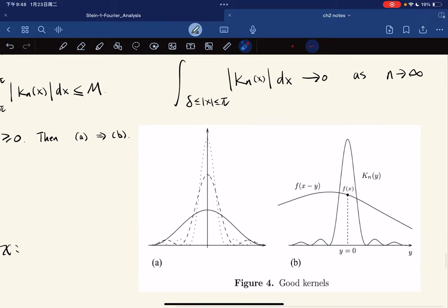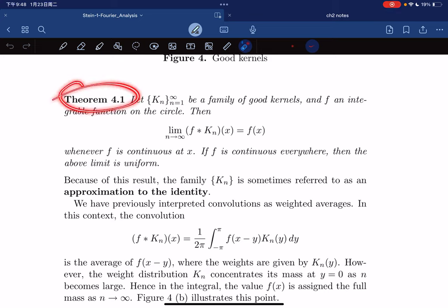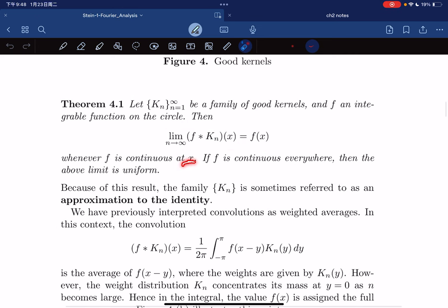Here this leads to Theorem 4.1. It states that if we're given a family of good kernels and f is an integrable function on the circle, then we have pointwise convergence. The convolution of f with the kernel converges to f(x) as n goes to infinity, given that f is continuous at x.